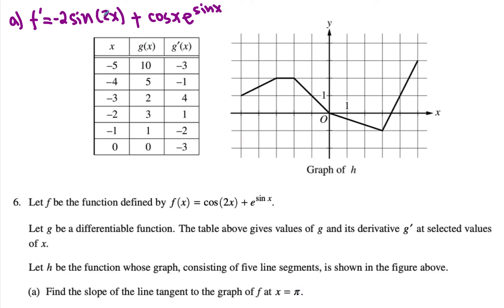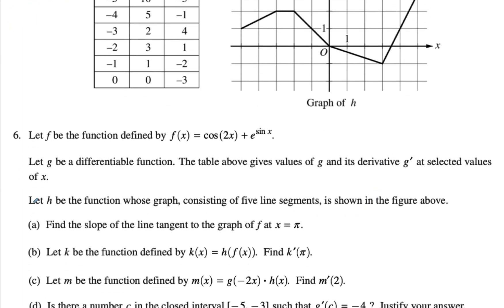Now if you plug in pi for x, then sine of 2pi becomes zero. So here we get x equals pi, then the first component becomes zero. Cosine of pi becomes negative one, so we get negative one times e to the zero power, which is equal to negative one. So that's how we can figure out the value of part a.